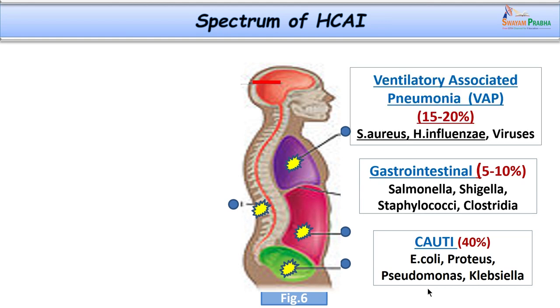The next type is ventilator associated pneumonia, called VAP, contributing up to 15 to 20 percent. The causative organisms include Staphylococcus aureus, Haemophilus influenzae, and some viruses.